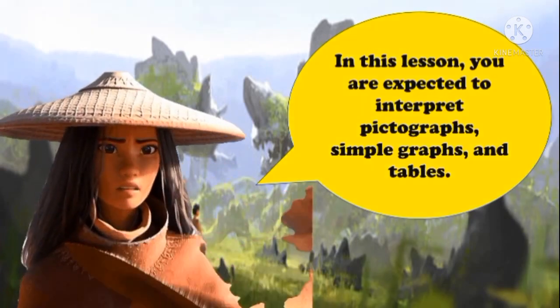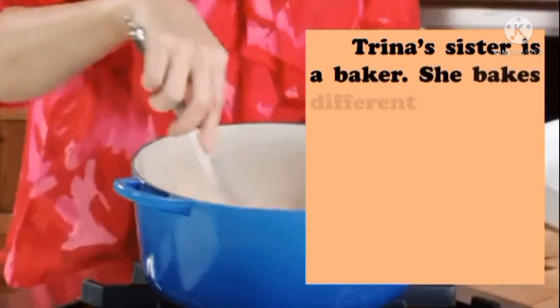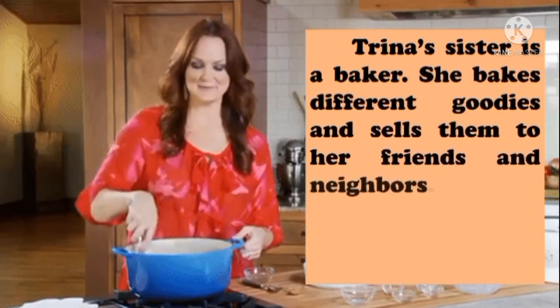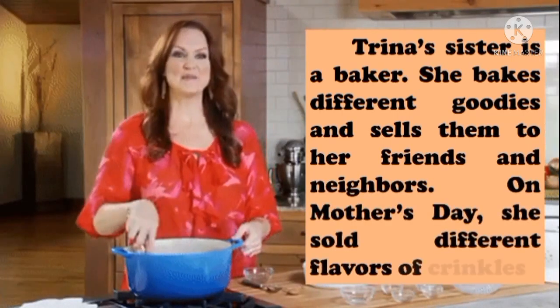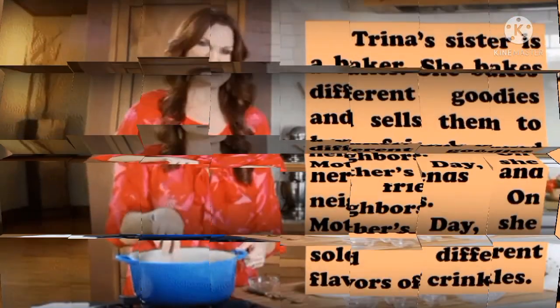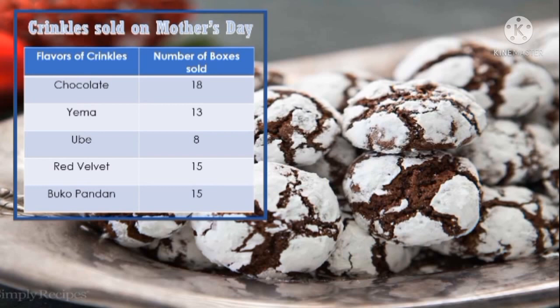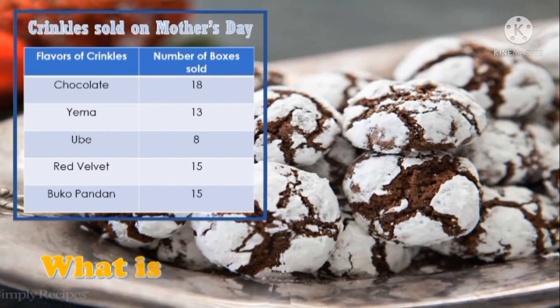Here's an example problem. Trina's sister is a baker. She bakes different goodies and sells them to her friends and neighbors. On Mother's Day, she sold different flavors of crinkles. Here is the table. The title is 'Crinkles Sold on Mother's Day.' On the first column we have the flavors, and on the second column we have the number of boxes sold. Chocolate: 18 boxes, yema: 13 boxes, ube: 8 boxes, red velvet: 15 boxes.